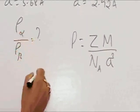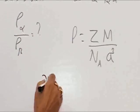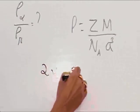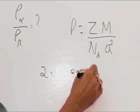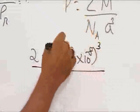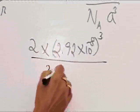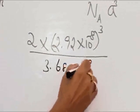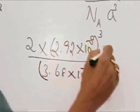We have 2 times 2.92 times 10 to the power minus 8 the whole cubed, divided by the other edge length, that is 3.68 times 10 to the power minus 8 the whole cubed. When we solve that...